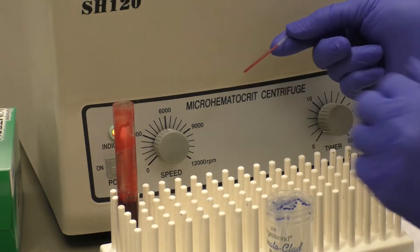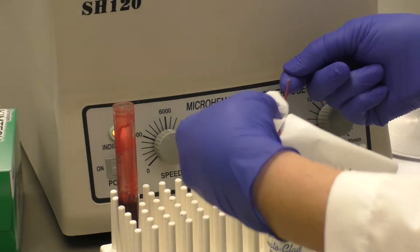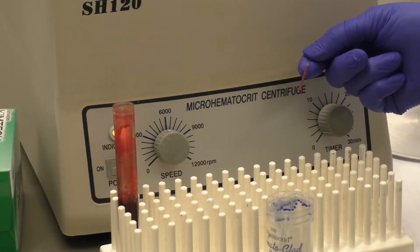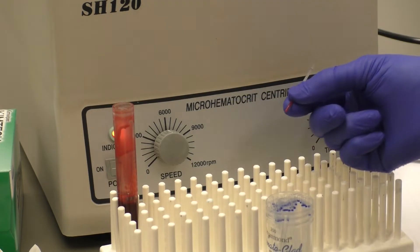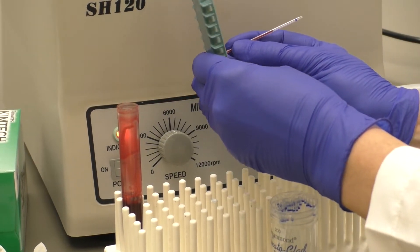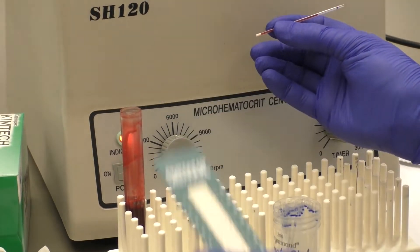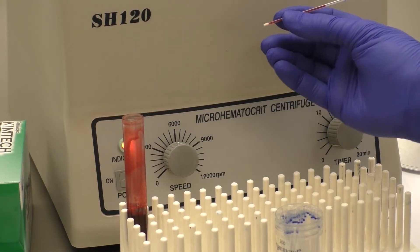Wipe excess blood from the outside of the micro-hematocrit tube with gauze or a kimwipe. Seal one end of each tube with a small amount of clay material at a 90 degree angle. Be sure the seal has a perfectly flat bottom.